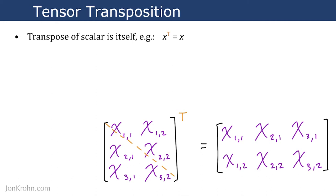The easiest kind of tensor to transpose is a zero-dimensional tensor, a scalar. The transpose of a scalar is simply itself.